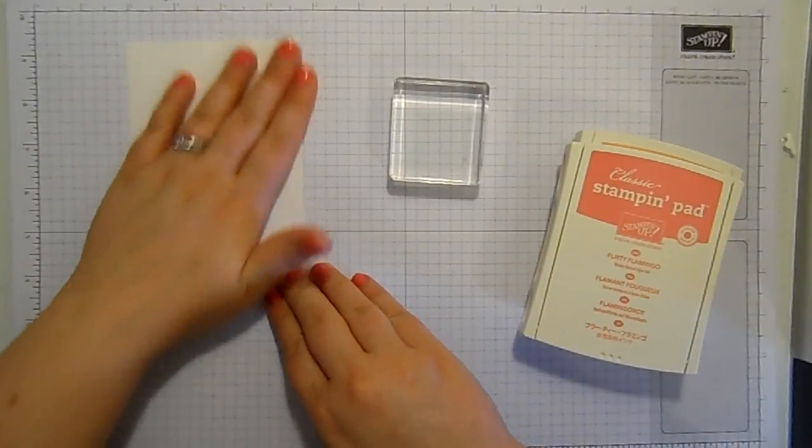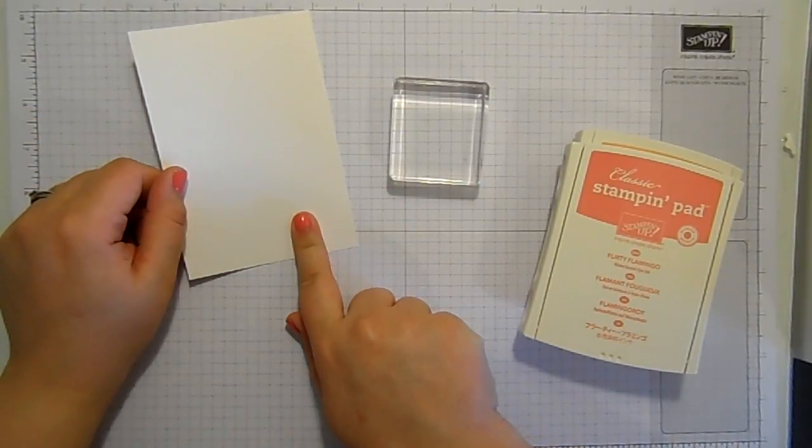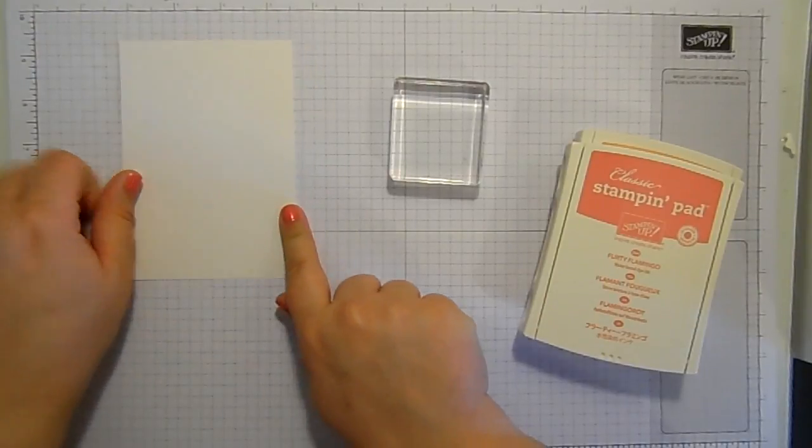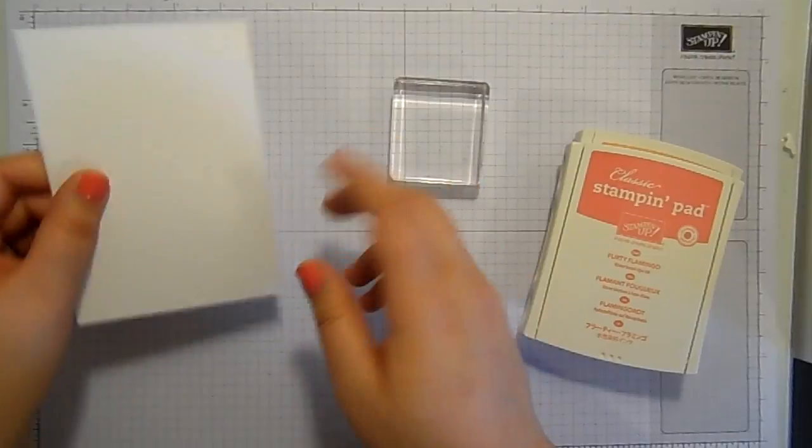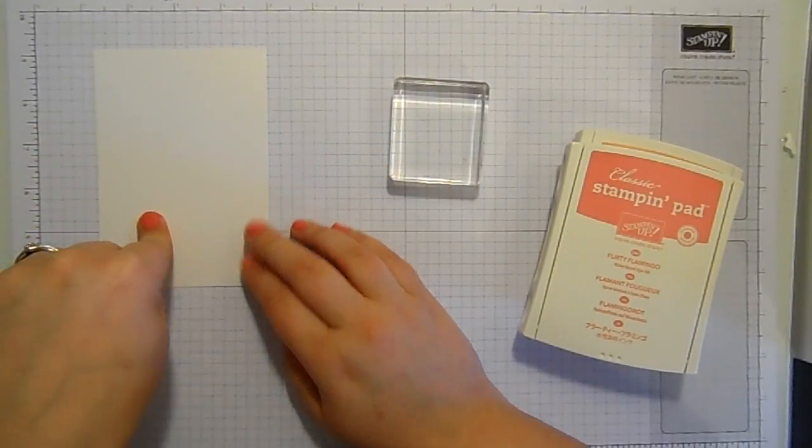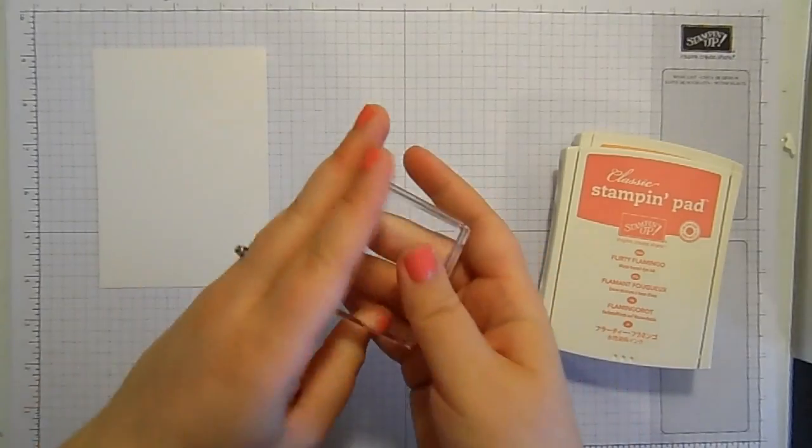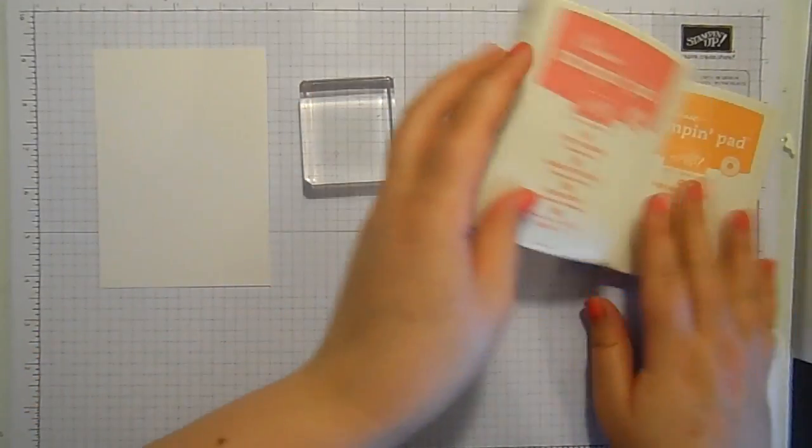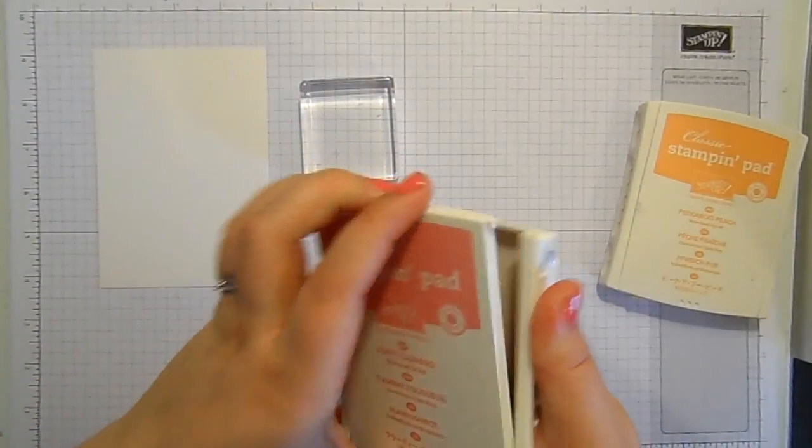I've got a piece of paper. Now you could use this because it's a bit thicker than Whisper White. Thick Whisper White or watercolor paper. I've got a clear block in size C, which is my favorite, and I've got two ink pads. I've got one in Peekaboo Peach and one in Flirty Flamingo. I'm going to open them up.